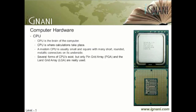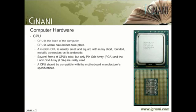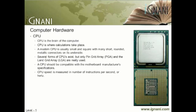Several forms of CPUs exist, but only two are really used: the Pin Grid Array (PGA) and the Land Grid Array (LGA). With type PGA, the CPU will have pins to fit in the socket holes, but with LGA, the CPU will not have such pins and will just sit on the socket. A CPU should be compatible with the motherboard manufacturer's specifications. CPU speed is measured in number of instructions per second, or hertz. Since CPU clock speeds have approached theoretical limits of physics, companies are adding multiple cores and fast caching mechanisms to improve CPU speed.